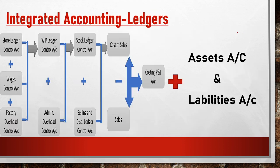In integrated accounting, in addition to all those accounts opened in cost books, we add accounts related to assets and liabilities. The General Ledger Adjustment Account is not opened in integrated accounting. So this video covers what is meant by integrated and non-integrated accounting systems and the features and differences between them.